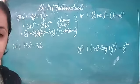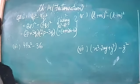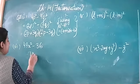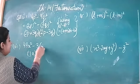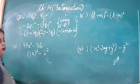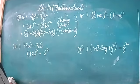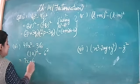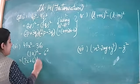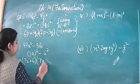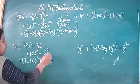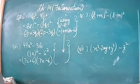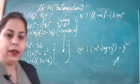I hope you have tried it. 49x squared can be written as (7x) whole square and 36 can be written as 6 whole square. So this becomes (7x plus 6)(7x minus 6). Write the same identity here as well.